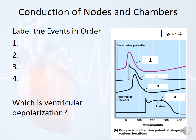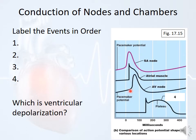If we put all those different action potentials together: the SA node action potential is number one. Number two is atrial muscle contraction — it looks a bit like a cardiac action potential with a plateau, but not quite as long. Number three is the AV node — again with that distinct bump characteristic of the pacemaker cell potential. And lastly, all the ventricular cells show that nice long plateau, which allows extra calcium influx to generate more tension and also allows all those cells to contract at once.